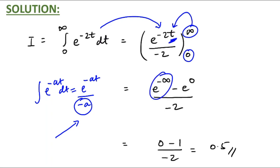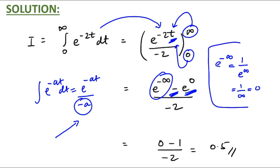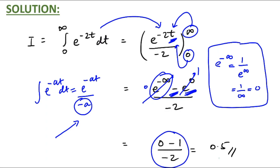First we place the upper limit: it would be e raised to minus infinity. Then minus the lower limit, which is 0: it would be e raised to 0. Now, e raised to minus infinity is 1 upon e raised to infinity, which is 1 upon infinity, and 1 upon infinity is 0. So this term is 0, and e raised to 0 is 1, so 0 minus 1 upon minus 2 gives the answer 0.5.